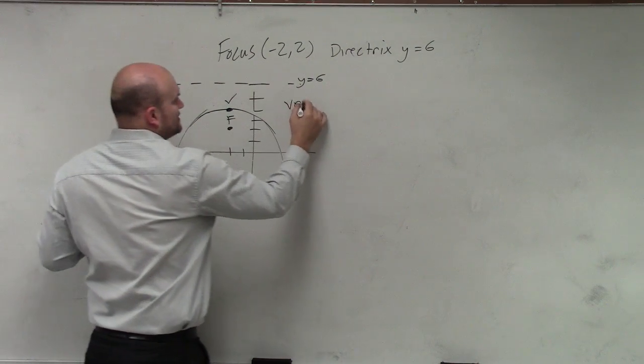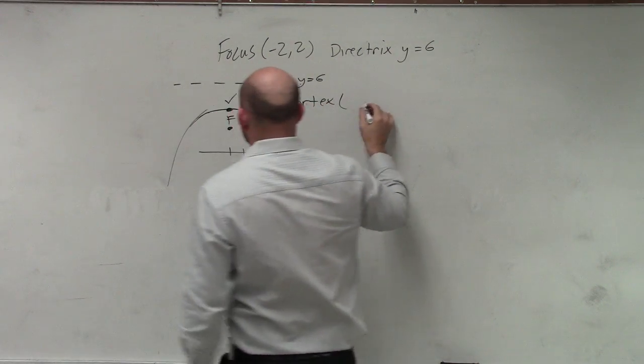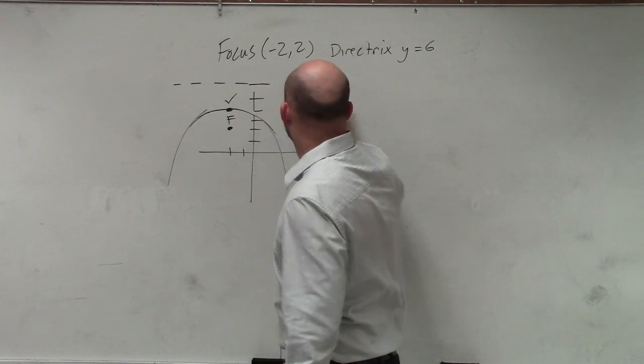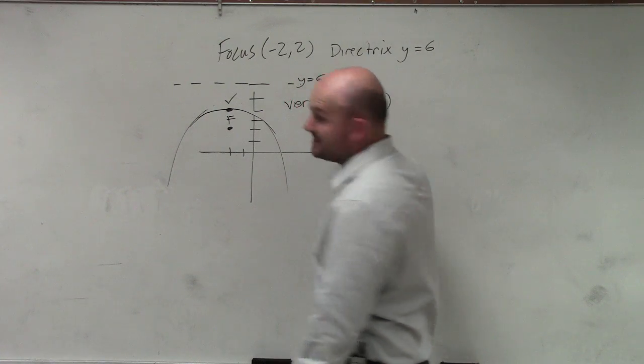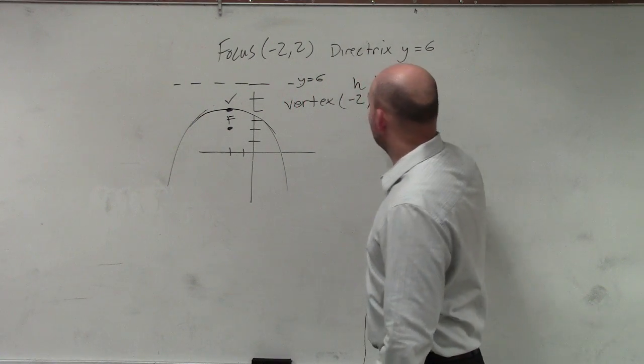That's my vertex, actually right there. So what is that point? So my vertex is at negative 2, and 1, 2, 3, 4. That's important because that's my H and that's my K.